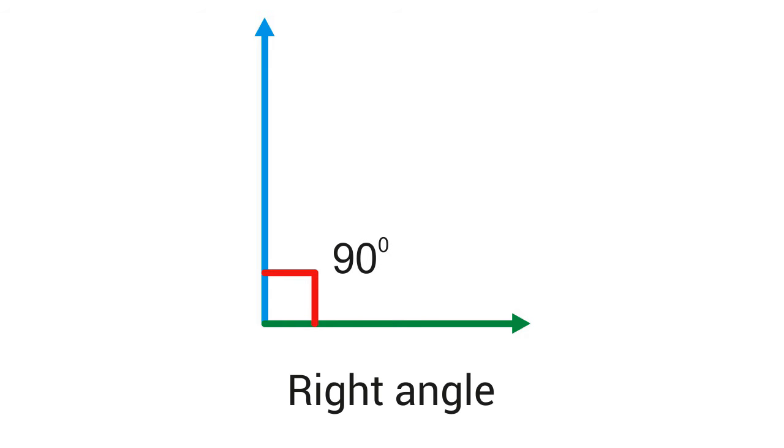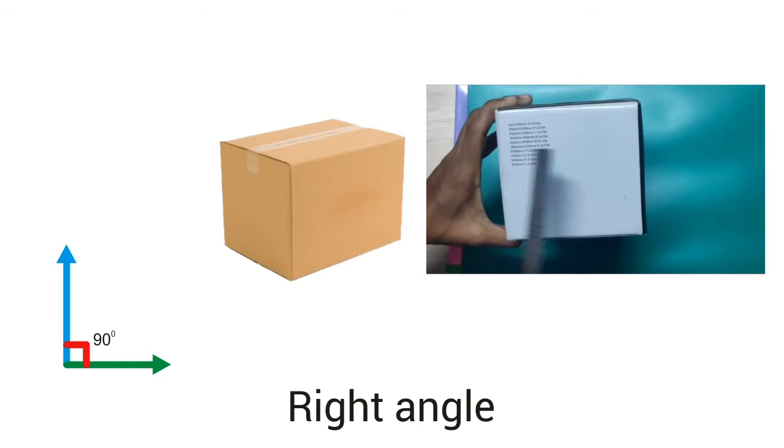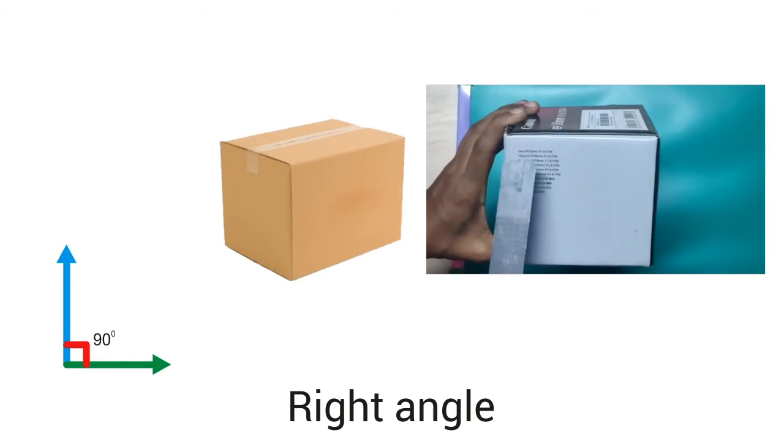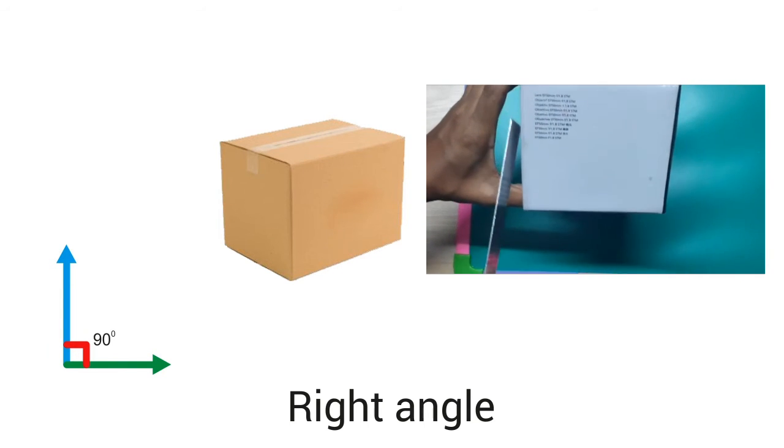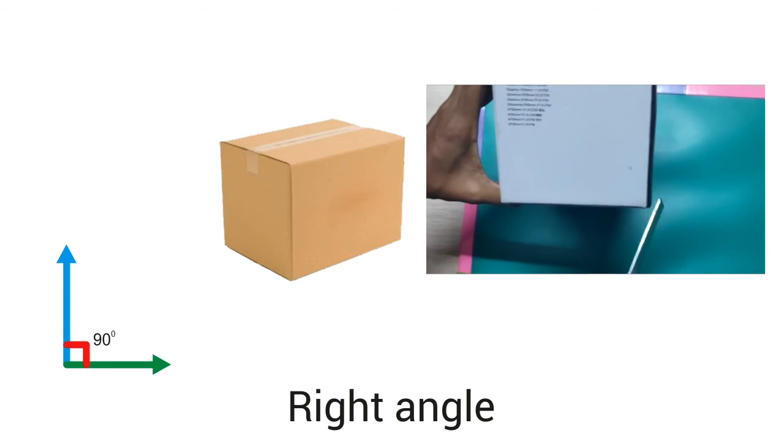First we will see right angle. When two rays are perpendicular or are making an angle of 90 degrees with each other, they form a right angle. All the four sides of the box show us the right angle. One, two, three, and four.